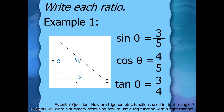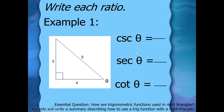Now we're going to flip all the reciprocals. There are times I might ask you on a quiz to find the cosecant without doing the sine first, so you need to know that cosecant is hypotenuse over opposite. Let's do it with the hypotenuse over opposite part instead of just flipping. This is my opposite, my adjacent, my hypotenuse. Cosecant is hypotenuse over opposite. My hypotenuse is five, my opposite is three, so five over three.